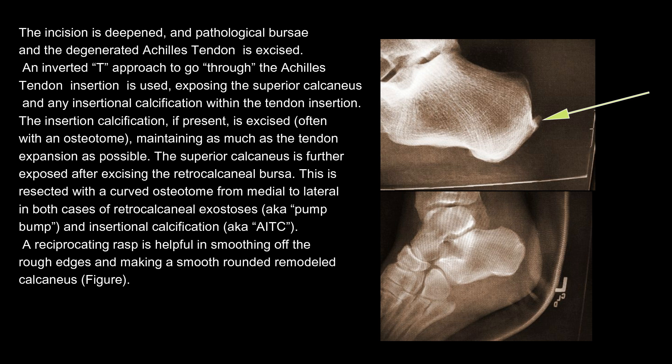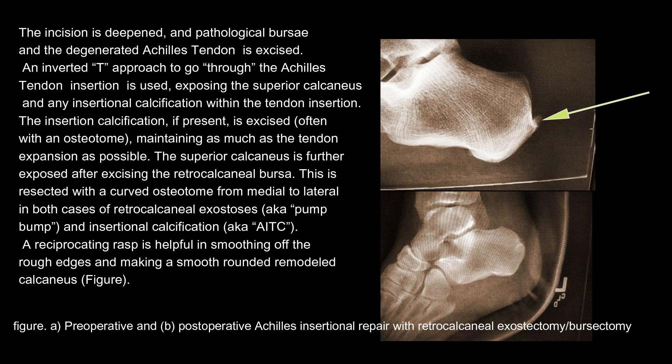The superior calcaneus is further exposed after excising the retrocalcaneal bursa. This is resected with a curved osteotome from medial to lateral, in both cases of retrocalcaneal exostoses (aka pump bump) and insertional calcification (aka AITC). A reciprocating rasp is helpful in smoothing off the rough edges and making a smooth, rounded, remodeled calcaneus. Figures show A. Preoperative and B. Postoperative Achilles insertional repair with retrocalcaneal exostectomy and bursectomy.